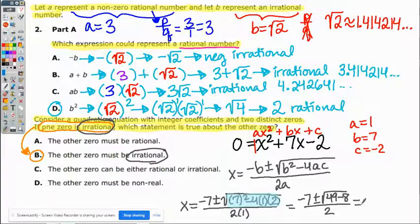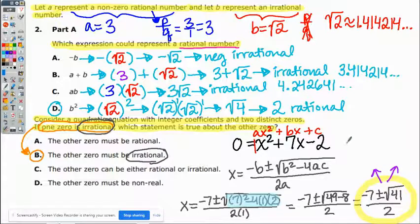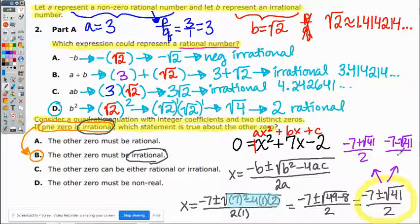Then if you do that one more time, you'll have negative 7 plus or minus, condense the inside, 49 minus 8 is 41. From here, we have two answers. This represents two answers. Your two answers are negative 7 plus the square root of 41 divided by 2. Negative 7 minus the square root of 41 divided by 2.